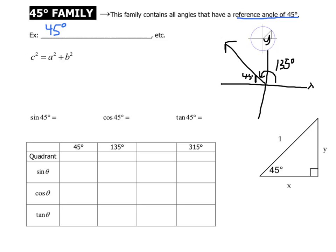So this family is 45 degrees, 135 degrees, one in quadrant three, and one in quadrant four. These are the angles that are in the 45-degree family. They will all have the same sine, cosine, and tangent ratios, or at least the absolute value of those ratios.